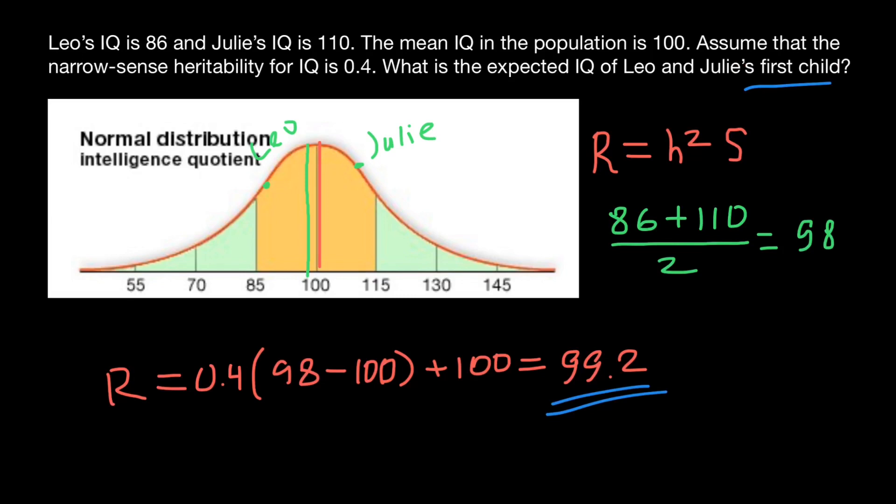But this problem is just to demonstrate how to solve this type of problem. Again, 0.4 in this formula stands for the narrow-sense heritability, which is h².